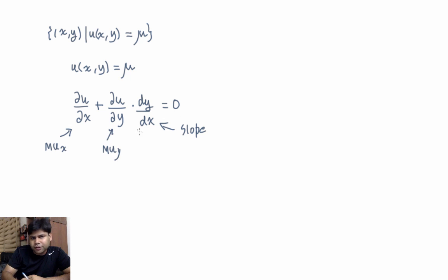Now, solving this particular equation, we can just write dy/dx equals minus ∂u/∂x upon ∂u/∂y. This is minus MUx over MUy. So that's the slope of the indifference curve.